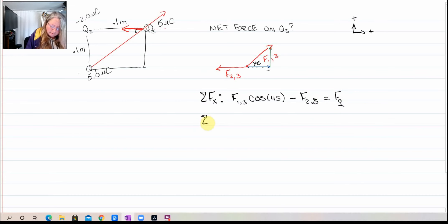The sum of our forces in the y, we only have the one. I have the y component of this force here. So I'll have force 1 on 3 and that's going to be sine, the opposite side of that angle, so sine of 45.